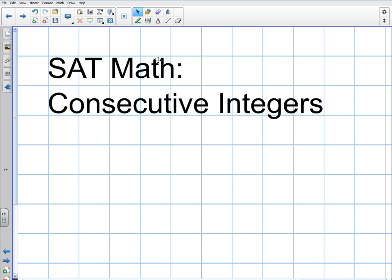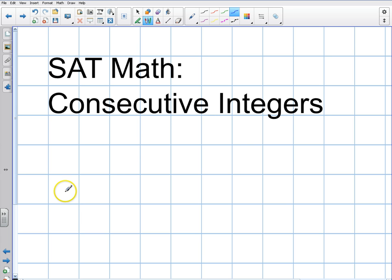One of the most popular topics you'll see on the SAT is the topic of something called consecutive integers, and it appears a lot. Consecutive integers just means that there are numbers written in an order, and one comes exactly after the other. So for example, if I had one, the next one would be two, the next one would be three, the next one would be four, and the next one would be five.